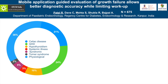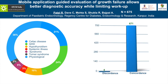We validated this approach pathway in 625 naive patients who were not part of the initial algorithm development. These patients showed a similar pattern and, being endocrine patients, were more likely to have a pathological cause — two-thirds had a pathological diagnosis. Most interestingly, 671 out of 675 patients had a concordant result as far as the outcome was concerned, suggesting that this app is quite valid in providing guided growth interpretation on your fingertips.